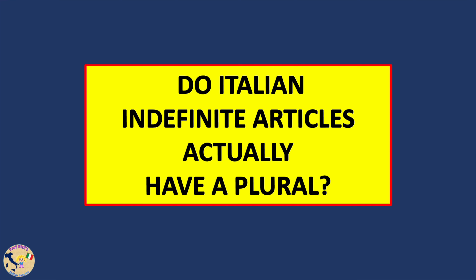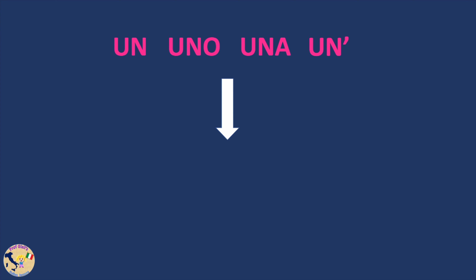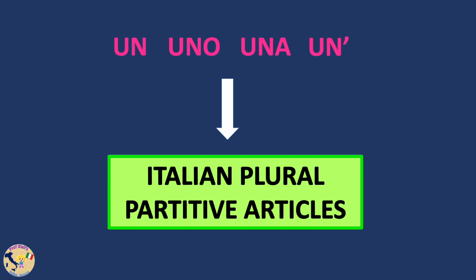The title of this lesson might be a bit misleading as far as Italian indefinite articles are concerned. In fact, the question one should ask when learning about these articles is: do they actually have a plural? The answer is no. In Italian, plural indefinite articles do not exist. So how do we convert singular indefinite articles un, uno, una, and un' with apostrophe into plural?